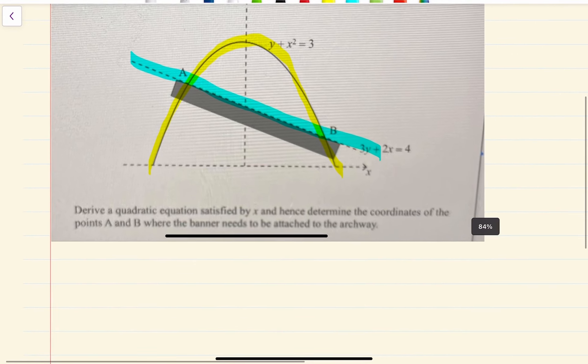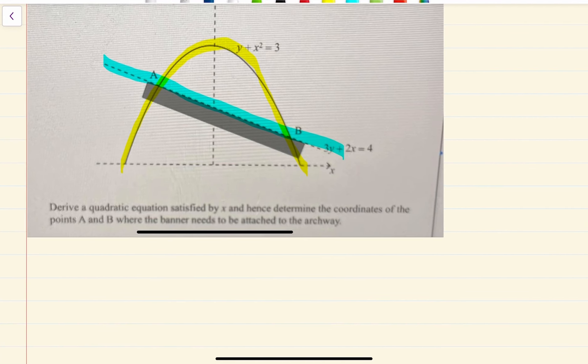So I'm going to write down two equations. Your two equations are y plus x squared is equal to 3. That's your quadratic equation, and I'll call that equation 1. And your linear equation is 3y plus 2x is equal to 4. That's equation 2.